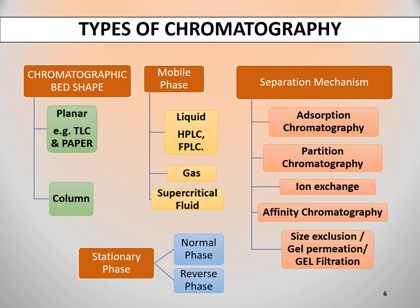On the basis of mechanism of separation — that is, how the molecules interact towards the stationary phase and how they are separated — we can classify chromatography into different types: adsorption chromatography, where the molecules of the mixture are adsorbed towards the stationary phase; partition chromatography, which can be liquid-liquid or liquid-solid chromatography; ion exchange chromatography, where polar components or ions in the mixture are exchanged with the charged particles on the stationary phase; affinity chromatography, where the components of the mixture have very high affinity towards the stationary phase; and size exclusion and gel permeation or gel filtration chromatography, in which the molecules are separated on the basis of their size and shape.